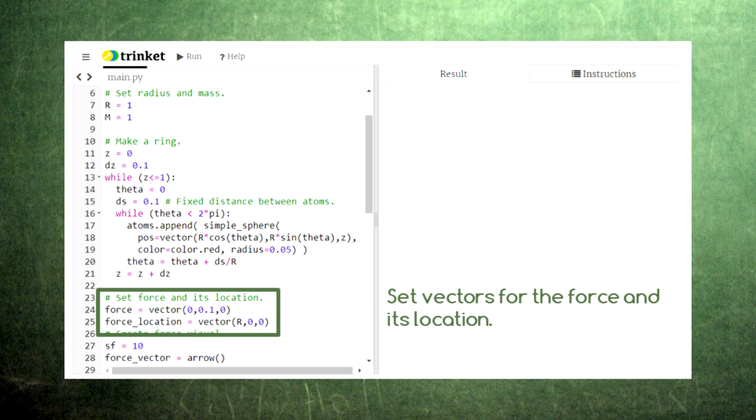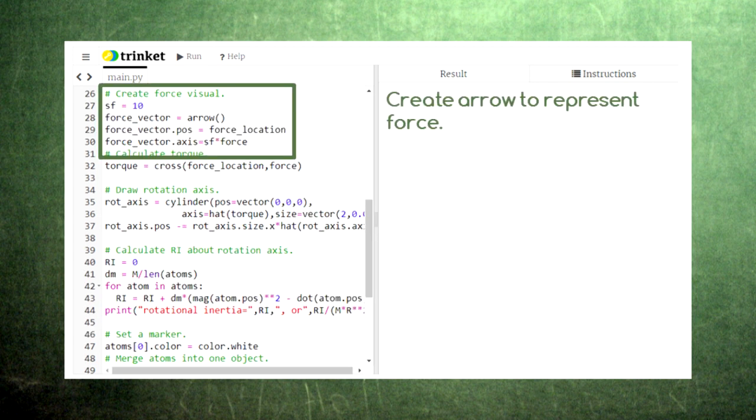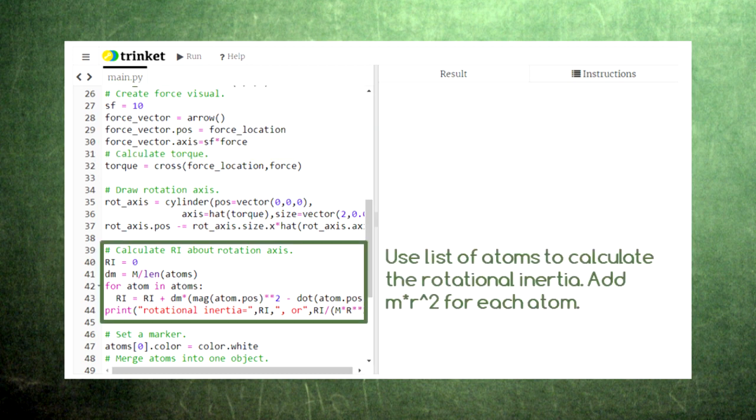Here, we set the force exerted on the shape and the location where that force is exerted. We'll represent this force using an arrow on the screen.